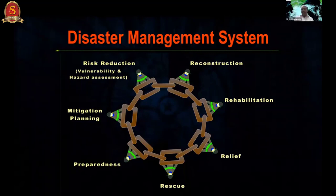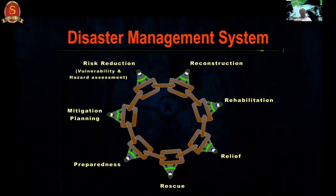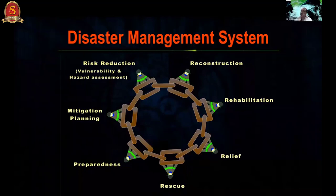After the 2015 Nepal earthquake, a huge amount of relief material came from different parts of the world, but Nepal's small airport lacked storage facilities. Similarly, during the 2015 Chennai flood, drinking water came in large containers but there was no mechanism to store or distribute it effectively in affected areas.